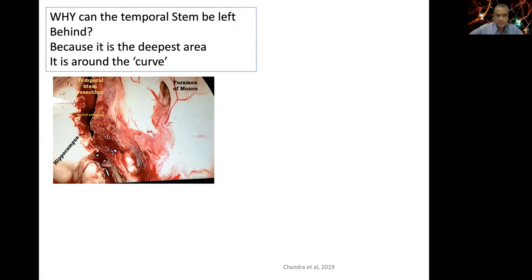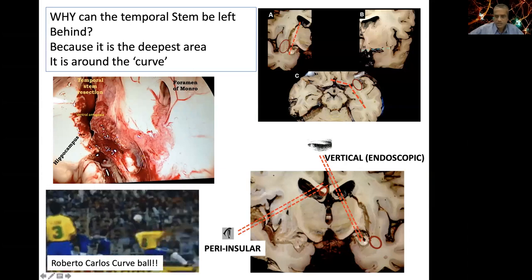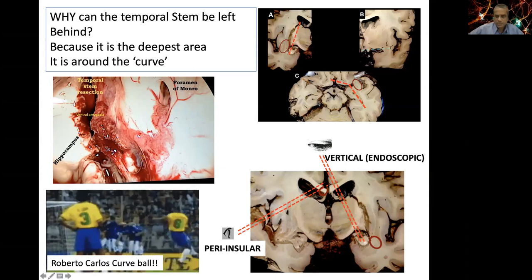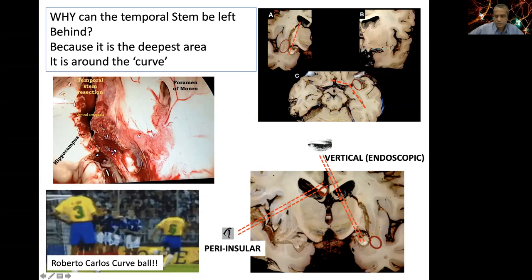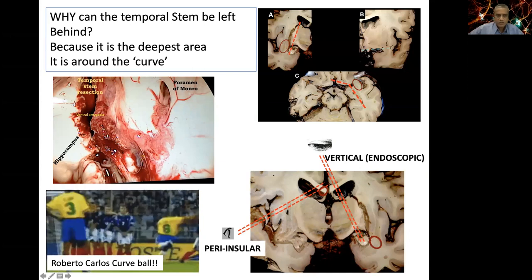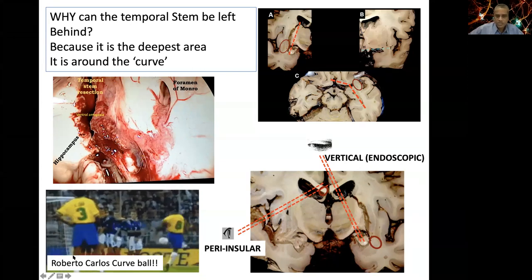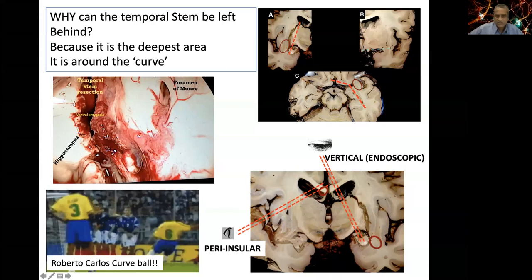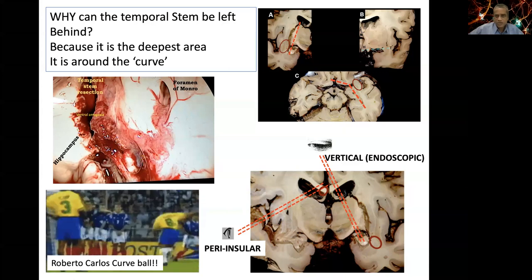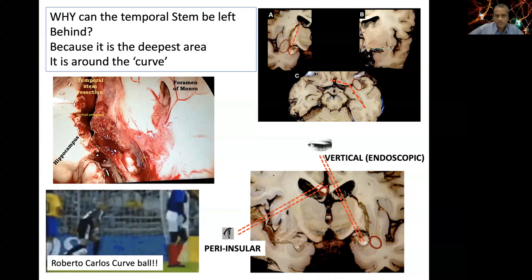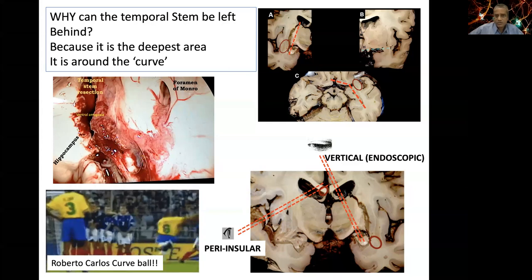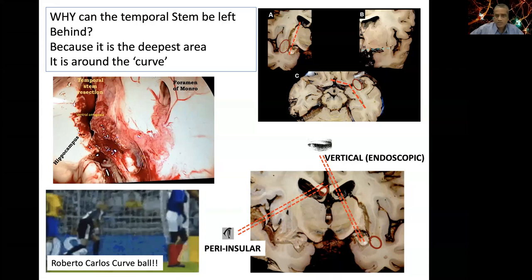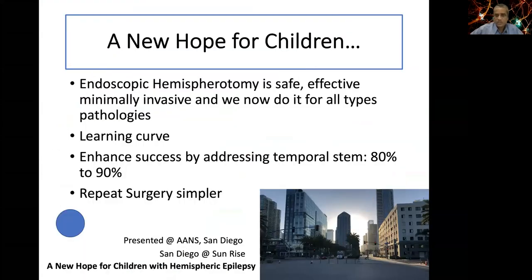The temporal stem is the deepest area in the vertical approach, around the curve. But if left behind, repeat surgery is very straightforward — it takes about 15 to 20 minutes using an endoscope through the porencephaly cavity, going anterior to the ventral amygdala. For complex pathologies like hemimegalencephaly, leaving and later addressing the temporal stem can be considered a staging strategy rather than a failure. Overall, the endoscopic technique is safe, effective, minimally invasive, and works for all pathology types, with excellent visualization.